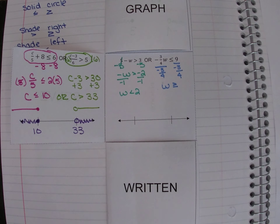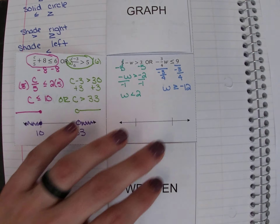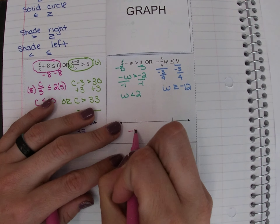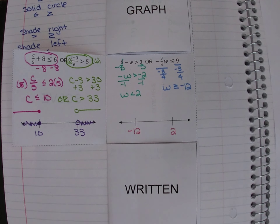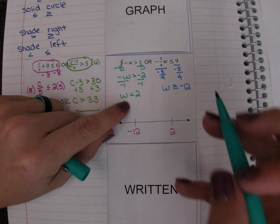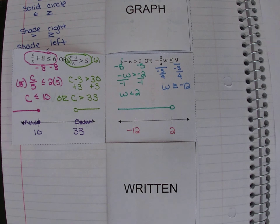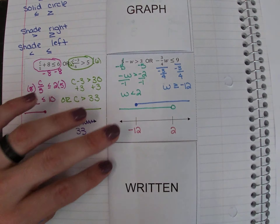Then we'll do the right-hand side. We're multiplying by negative three-fourths, so now I'm going to divide by negative three-fourths. I'm dividing by a negative, so again I flip that inequality sign. That gives us 9, and the other value gives us negative 12. So now when placing on the number line, negative 12 is the smaller one and 2 is the larger one. Graph above: open circle at 2 shaded to the left; solid circle at negative 12 shaded to the right.